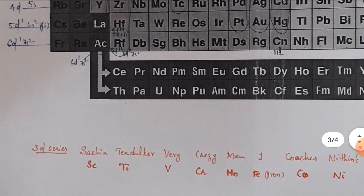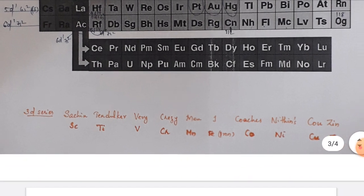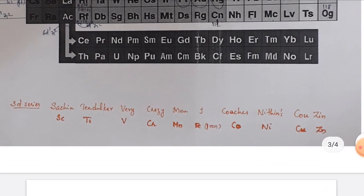To remember the 3D series elements, we use the mnemonic: Scandium, Titanium, Vanadium, Chromium, Manganese, Iron, Cobalt, Nickel, Copper, Zinc — that is, Scandium (Sc), Titanium (Ti), Vanadium (V), Chromium (Cr), Manganese (Mn), Iron (Fe), Cobalt (Co), Nickel (Ni), Copper (Cu), Zinc (Zn).